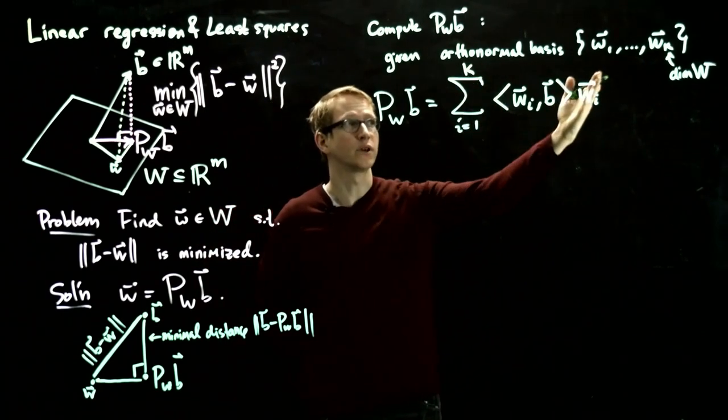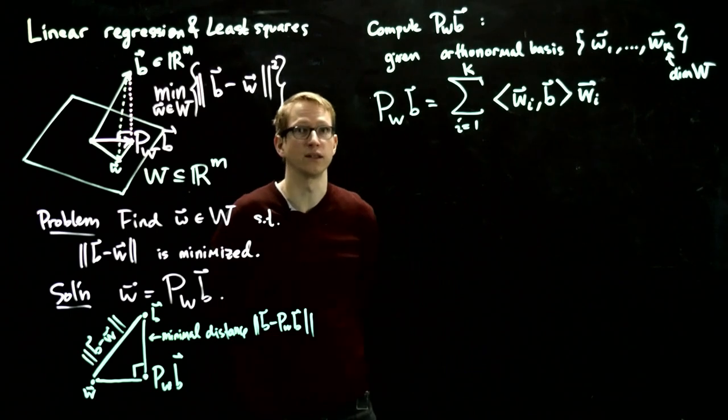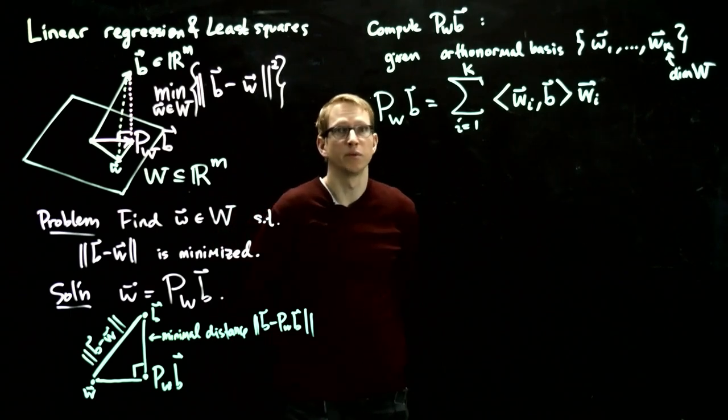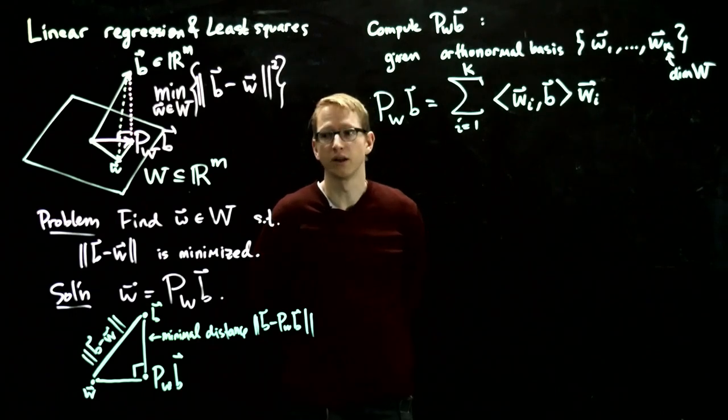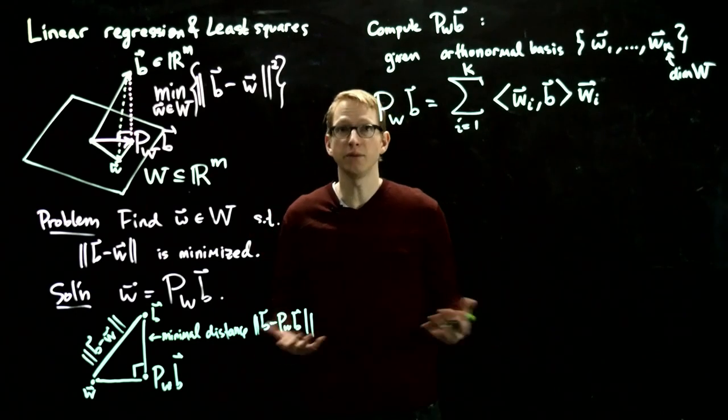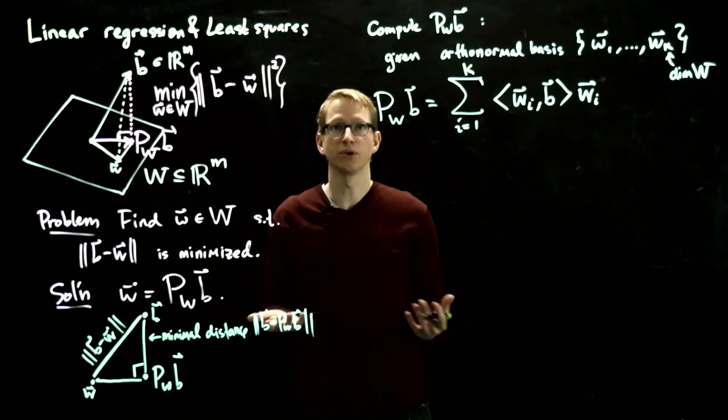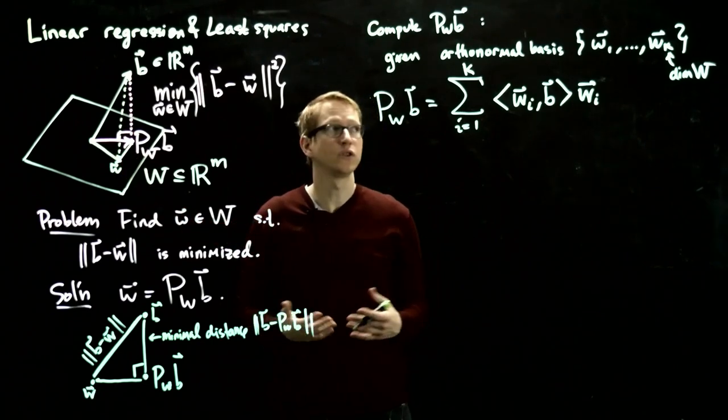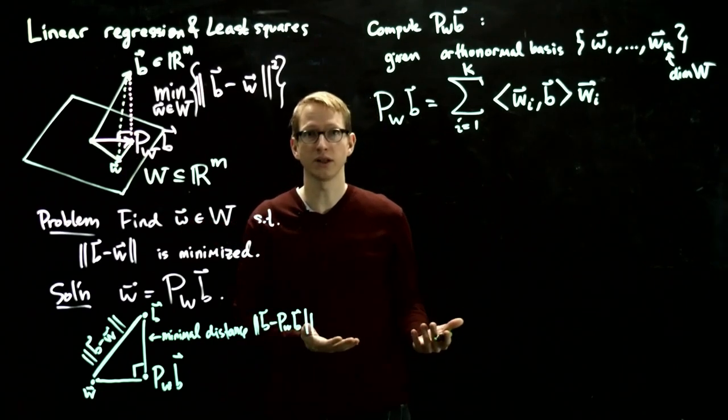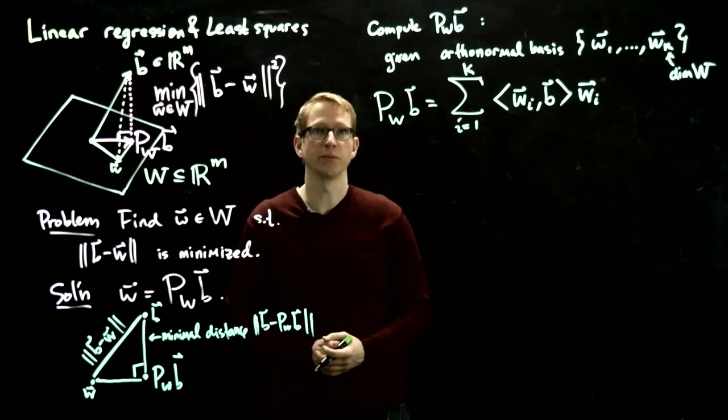You would need, for instance, an orthonormal basis for that subspace. But sometimes you're not given an orthonormal basis, so it might be difficult to compute it. One thing you could do is you can choose any basis of W, pick arbitrary vectors that are in W, and once you find k of them and you know that they're linearly independent, then you know that forms a basis.